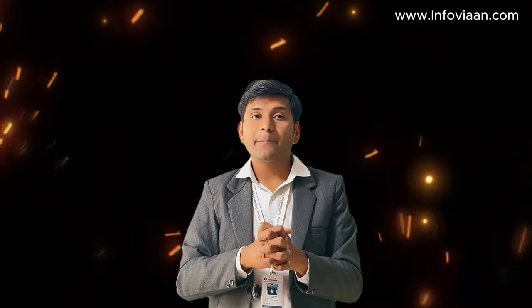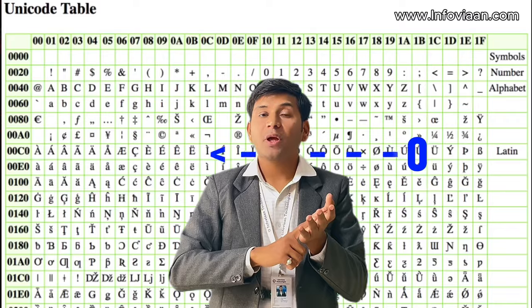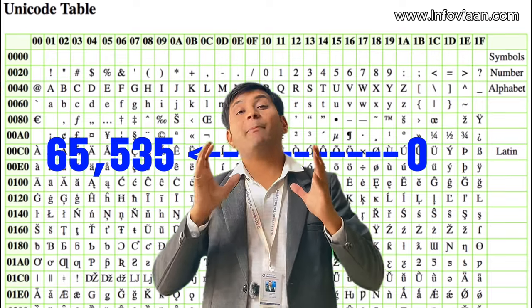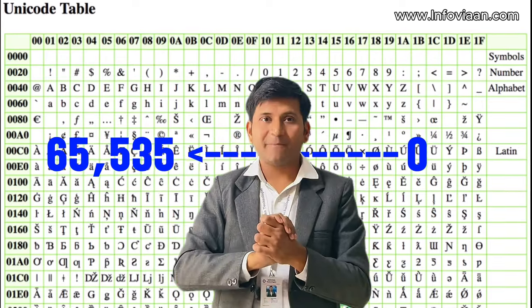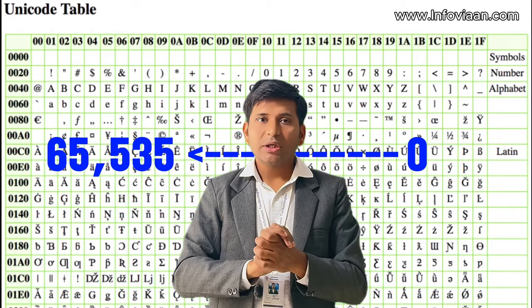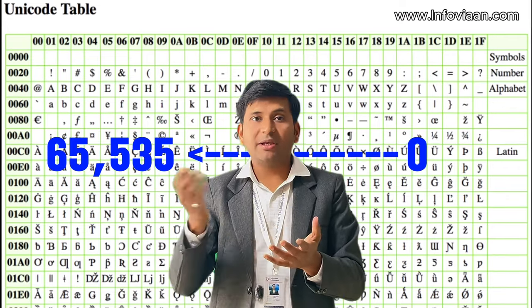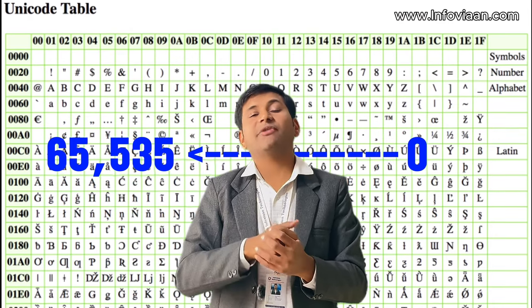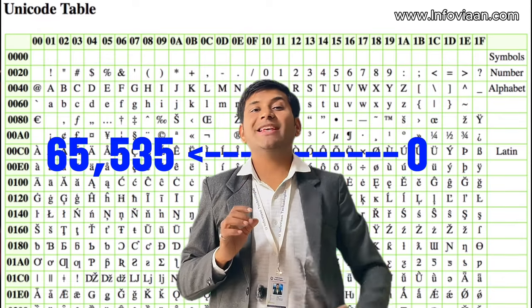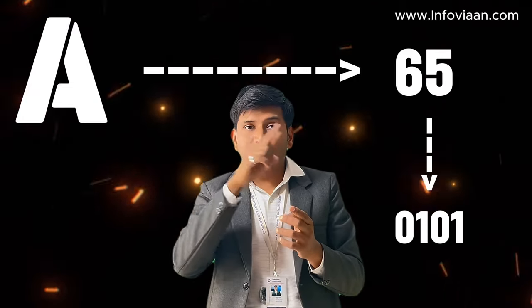There are so many Japanese symbols, Chinese symbols, and different types of characters in use worldwide. So a worldwide system was set up called Unicode, which starts from 0 and goes up to 65535. Unicode covers Hindi, Arabic, English, Japanese, Chinese, and all multiple characters and symbols worldwide. If you want to write the letter 'A' in machine language, you convert A to 65, then convert 65 to binary 0101.